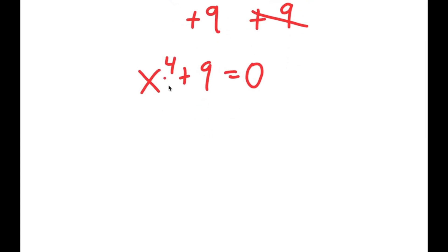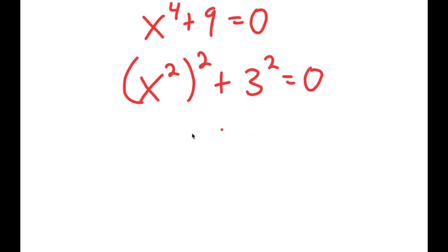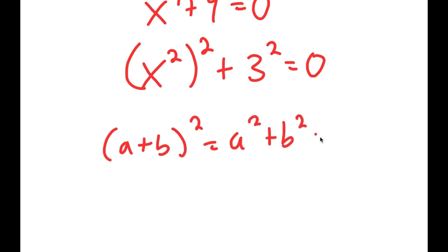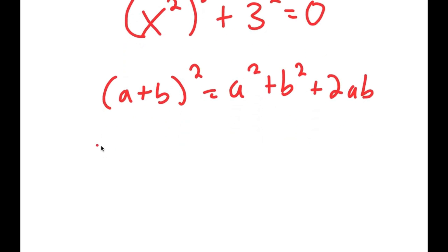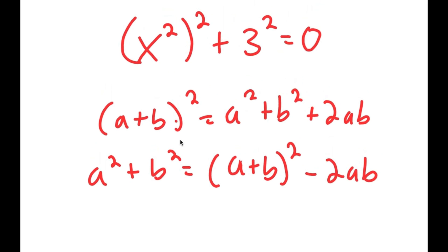From here, I can rewrite x to the power of 4 as x squared to the power of 2, and I can rewrite 9 as 3 squared. If I have something in the form a plus b squared, this is equal to a squared plus b squared plus 2ab. And if I have something in the form a squared plus b squared, then this must equal a plus b squared minus 2ab, because it's the same thing without the 2ab.